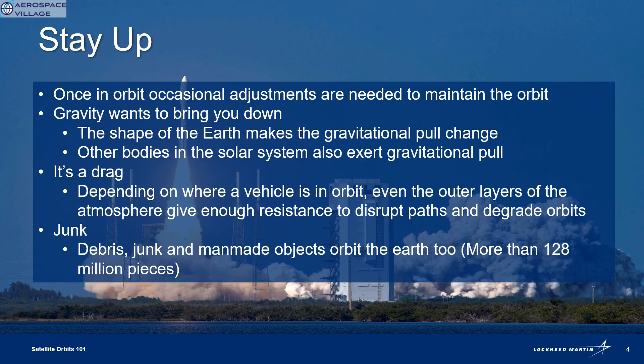Once you achieve orbit, you have to keep it. Fuel onboard the vehicle is used periodically to maintain or augment the orbit. The surface of the Earth isn't flat and smooth, so the changes in the surface — the topology of the Earth, all those mountains and valleys — can affect how the Earth pulls on the satellite over time. The other bodies in our solar system, like the Sun and the Moon, can also have a gravitational effect. Depending on where the vehicle is in relation to the atmosphere, even a very thin layer of air and particles up there can produce enough drag and resistance to affect an orbit.